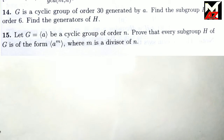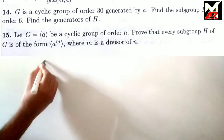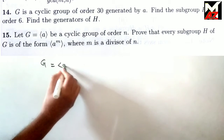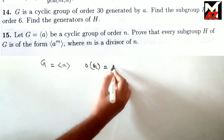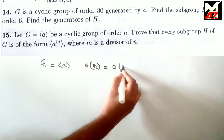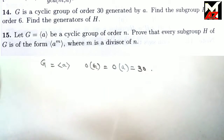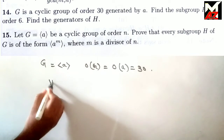The second example: Let G be a cyclic group of order 30 generated by A, so order of G = order of A = 30. Find the subgroup H of order 6 and find the generators of H.